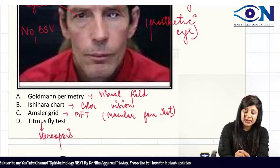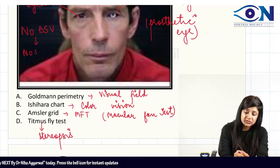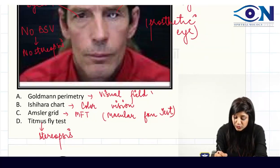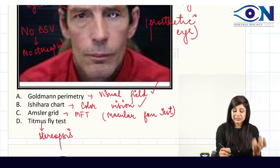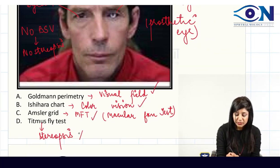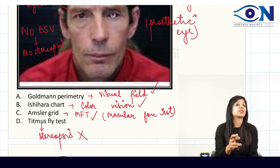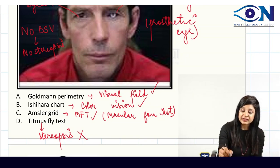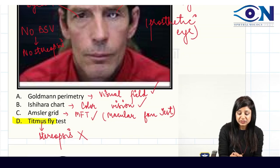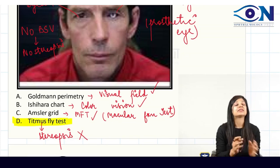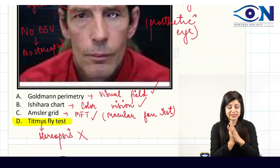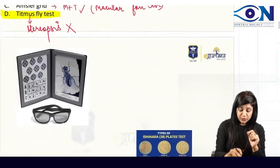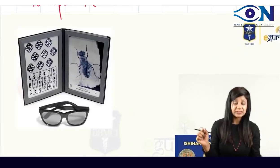For this one-eyed person, there is no stereopsis. You can check the visual field of one eye, you can do the color vision of one eye, you can check the macula of one eye — but you cannot test stereopsis with one eye. Since the Titmus fly test is for stereopsis, the answer to this question is the Titmus fly test.